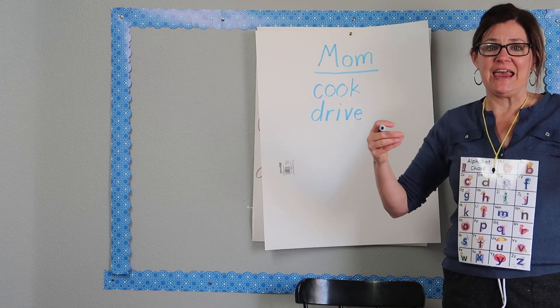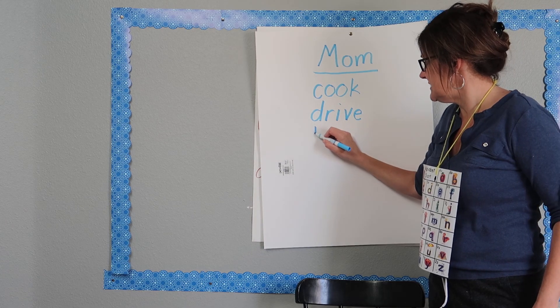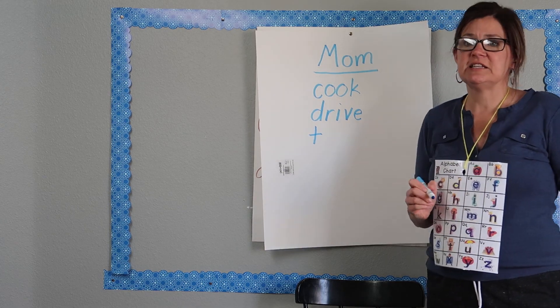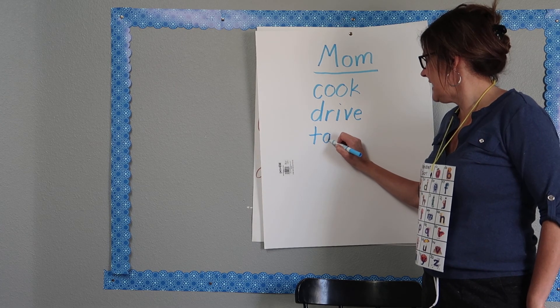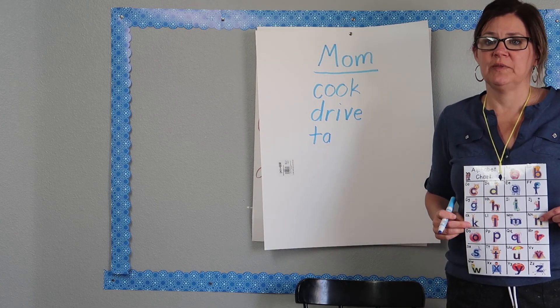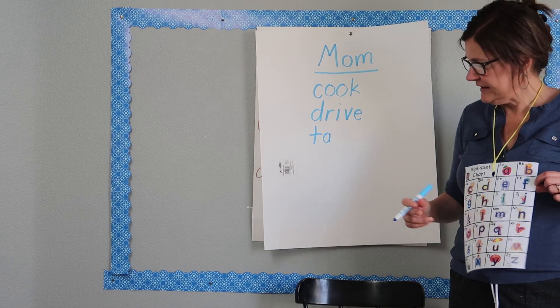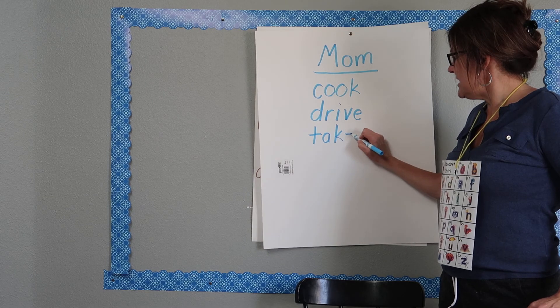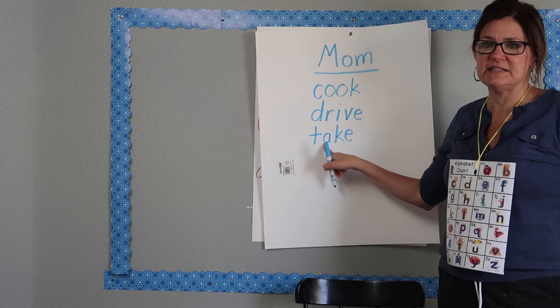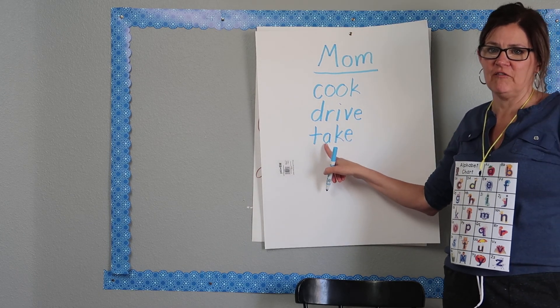T-T-T is T. T-A-A-A. Is that A? Take. Oh, there's my K right there. Key the kangaroo. And then again, I need that magic jumping E because that vowel said its name. It said A. It said the long vowel sound.